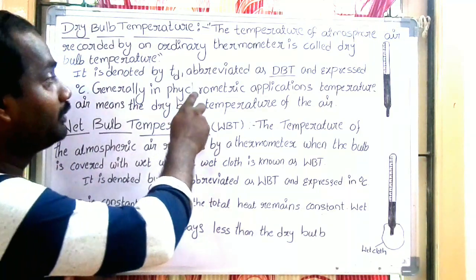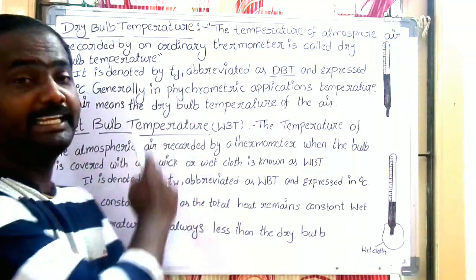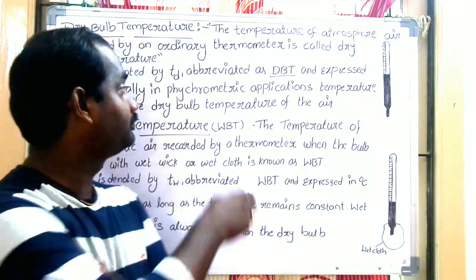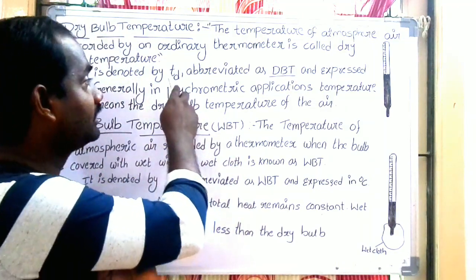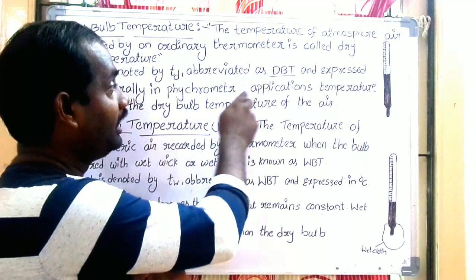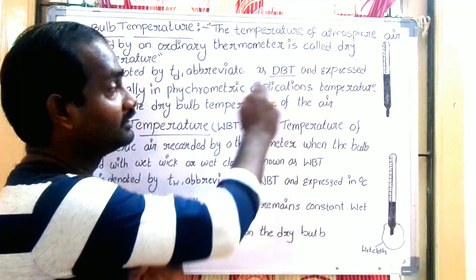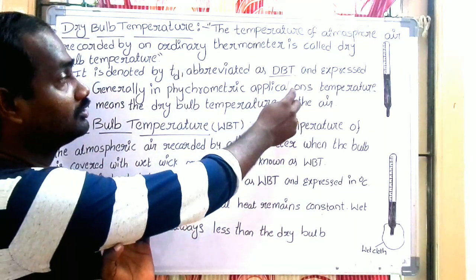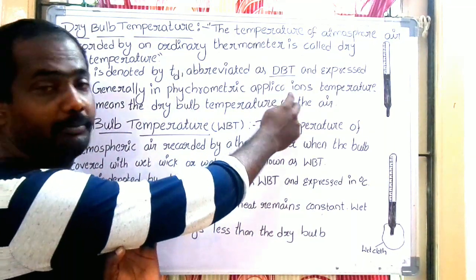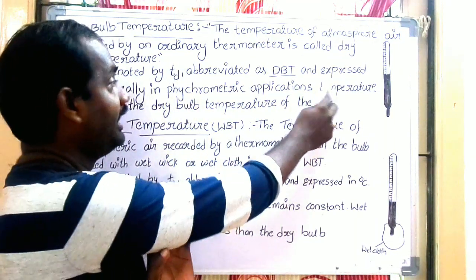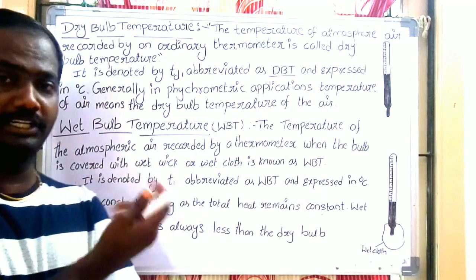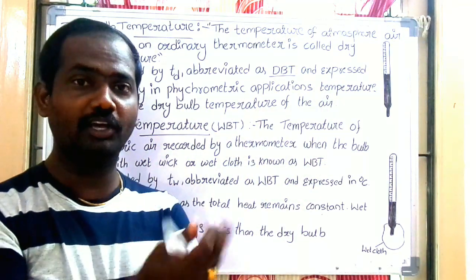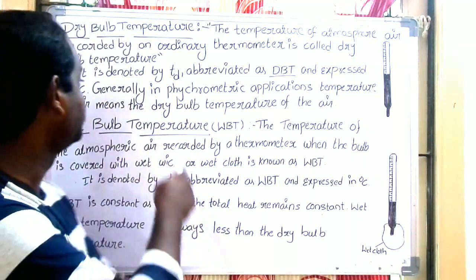It is denoted by Td. Dry Bulb Temperature is abbreviated as DBT. It is expressed in degree centigrade.